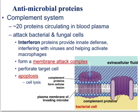The complement system is made up of about 20 different proteins that circulate in the plasma — the liquid portion of your blood — and their job is to attack bacterial and fungal cells. The main antimicrobial protein we have is called interferon. Interferon provides an innate defense and, as its name suggests, interferes with viruses. It also activates macrophages — disturbing the virus while signaling macrophages to come in and engulf virus-infected cells. They form a membrane attack complex, punching holes in the cell membrane, causing apoptosis.